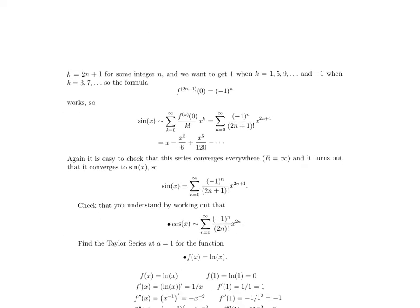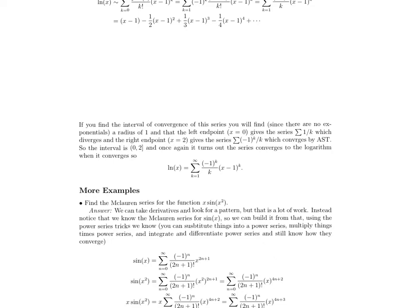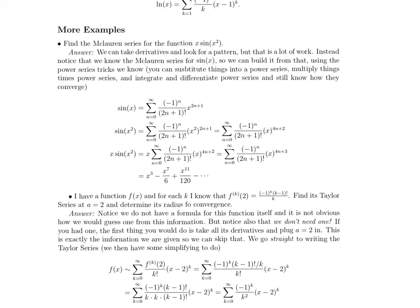We went through a couple of examples of finding the Taylor series, or the Maclaurin series, and I'm going to scroll quickly through that and do some more interesting examples. So the first one is find the Maclaurin series for the function x sin(x²). Naturally, the way to start would be to start taking the derivatives of this, plugging in x equals zero because it's a Maclaurin series, and find the pattern. That's a lot of work. Instead, we can use the work we've already done. We already know the Maclaurin series for sin(x), and we can use it to find the Maclaurin series for something built out of sin(x).